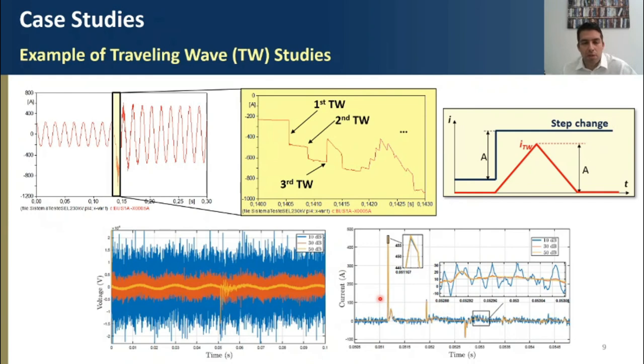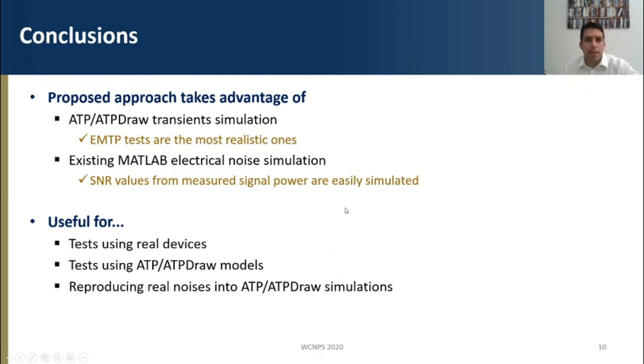As conclusions, we can say that the proposed approach takes advantage of the ATP transient simulation functions. Indeed, EMTP tests are the most realistic ones that can be carried out in today's technology. Existing MATLAB electrical simulation functions are also taken into account so that we can simulate different signal-to-noise ratio values from the measured input signal power. And, as a final conclusion, we can say that the proposed approach is useful for tests in real devices, tests in ATP-ATPDraw models, and also to reproduce real noise into the ATP environment.